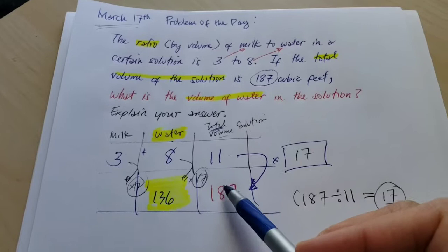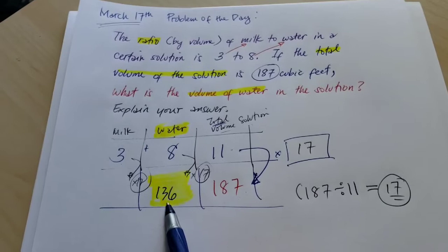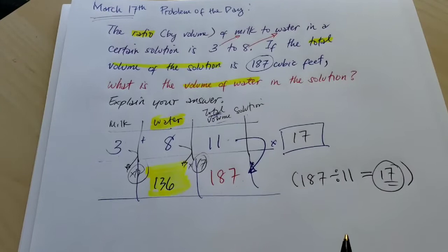Again, so 8 times 17 gives you 137 cubic feet of water.